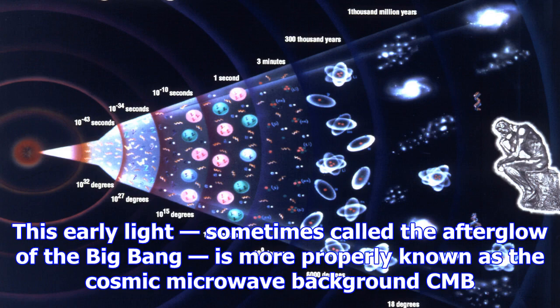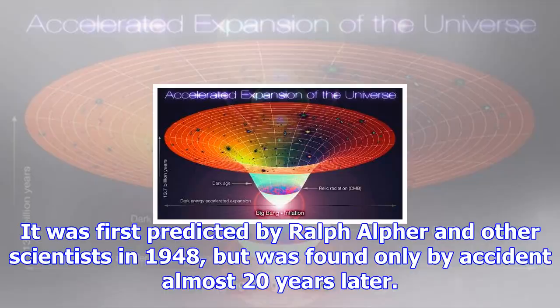This early light, sometimes called the afterglow of the Big Bang, is more properly known as the Cosmic Microwave Background CMB.